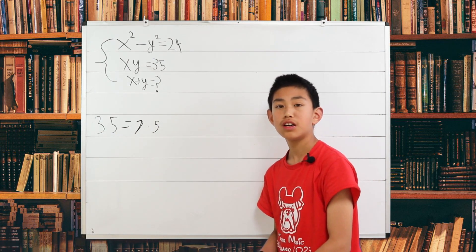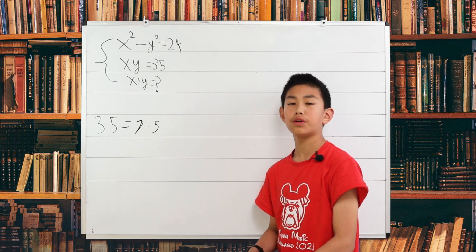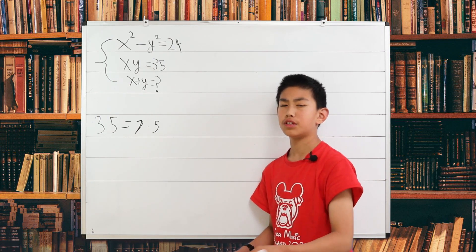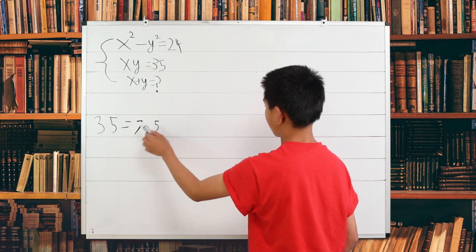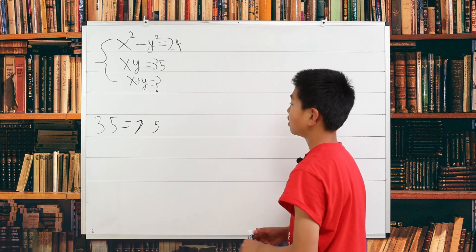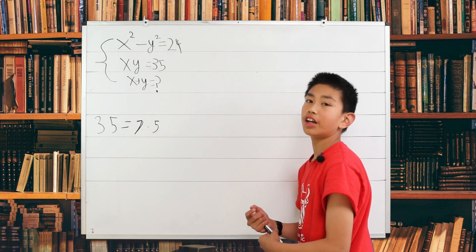Now we could quickly notice that 7 and 5 are prime numbers, meaning that they cannot be broken up into even smaller factors. So we know that 7 and 5, those are our x and y.